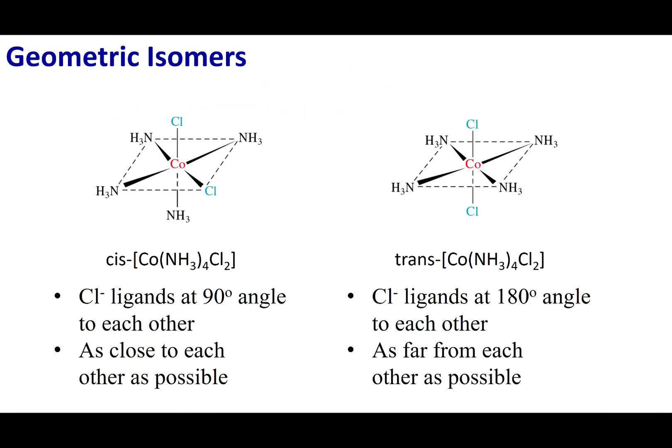To highlight: these are geometric isomers in octahedral geometries. Cis means 90 degrees apart; trans means 180 degrees apart. I hope that made sense, and remember to stay safe.